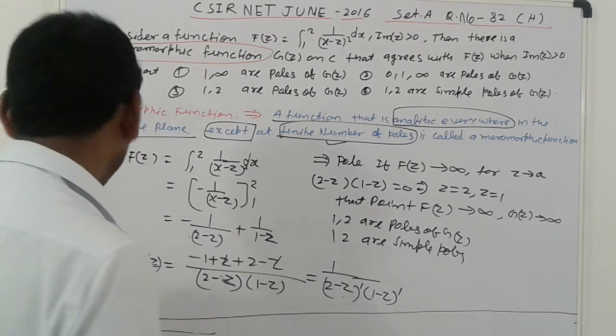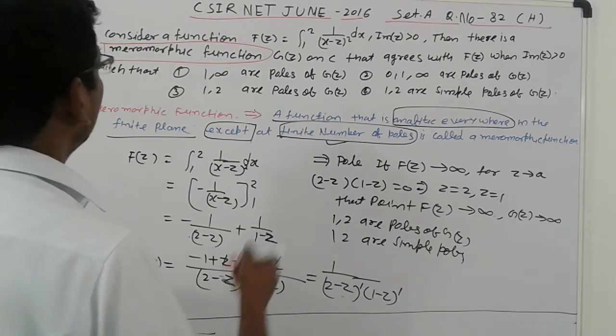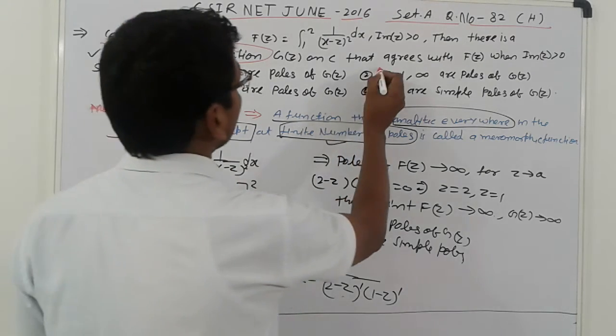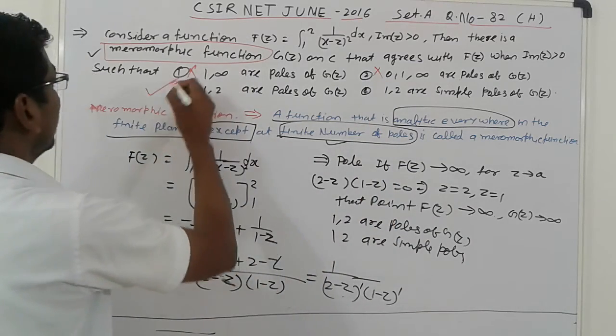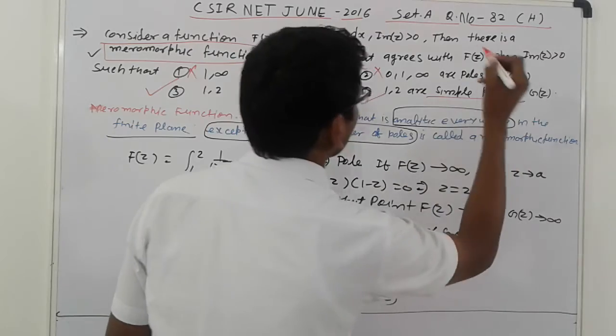So now, check out the option. Which option is correct? First, here, not infinity. So that is cancelled, only one. Here is also cancelled. So third option and fourth option is correct, which is pole and simple poles.